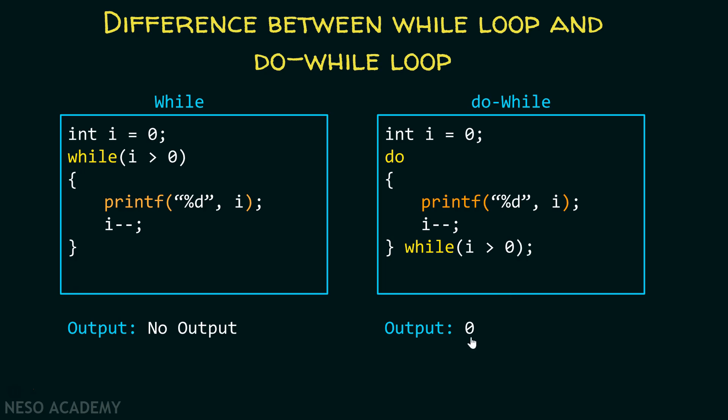Apart from this difference, there is one more difference to note. In the case of while, after the while statement you are not writing any semicolon. But in the do while loop, you need to put a semicolon. Please note this point — it is very important. If you don't put this semicolon, you will encounter an error.